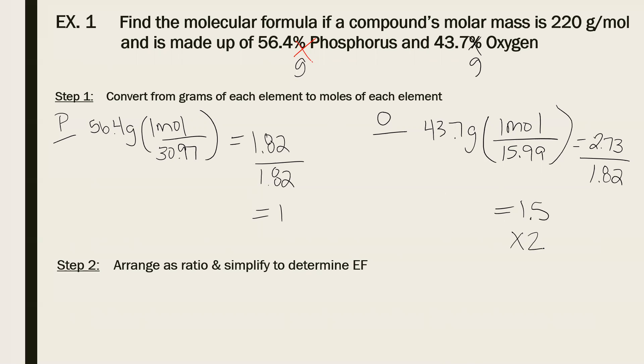If I do 1.5 times two, I get three. Well, that's a whole number so I can use that. Then I also have to do times two to this side. So I get one times two, so now I get two. So that's going to be my ratio. Two phosphorus to three oxygen.